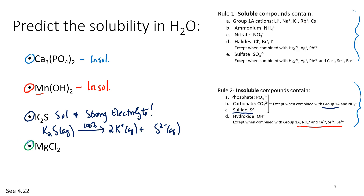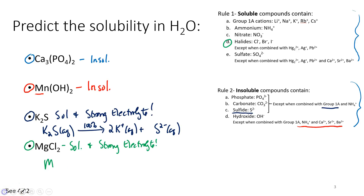And how about this one, magnesium chloride? All halides are soluble except when combined with mercury 1, silver, or lead 2, and we're not combined with any of those. So magnesium chloride would be soluble. You can also think of it as a strong electrolyte, meaning that in water, magnesium chloride dissociates 100% into magnesium ions and two chloride anions.